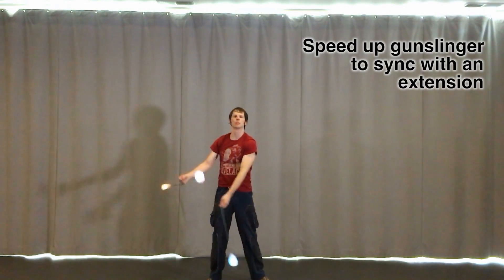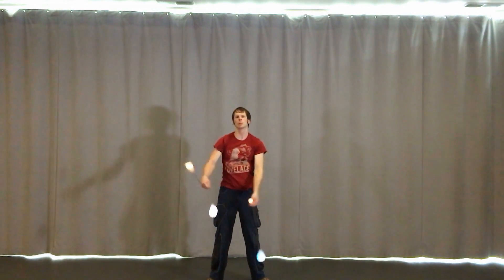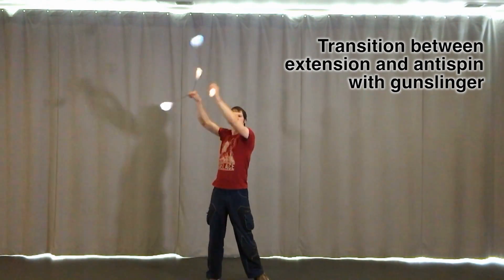Additionally, we can perform an extension versus 10 petal gunslinger by keeping our two hands together and speeding up the gunslinger flower just slightly. Try transitioning from the 4 petal versus 10 petal to extension versus 10 petal and back again.